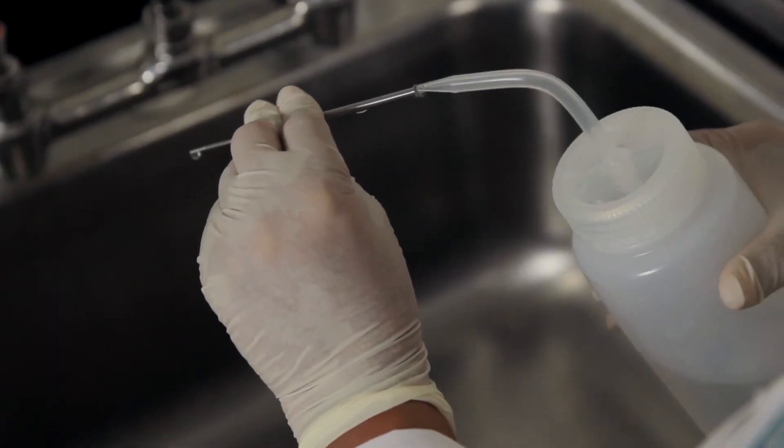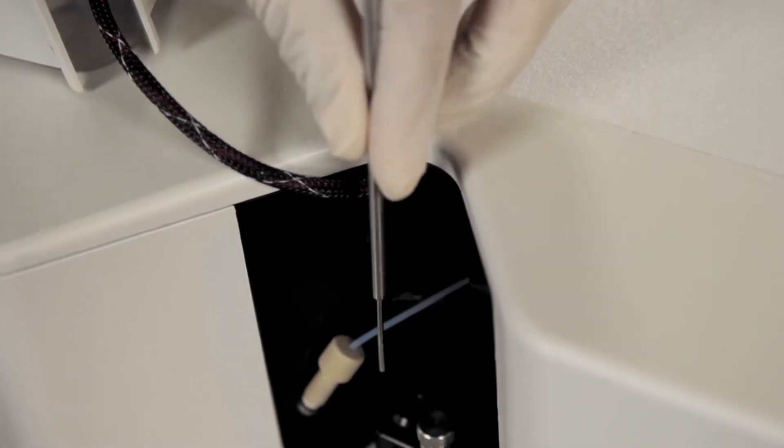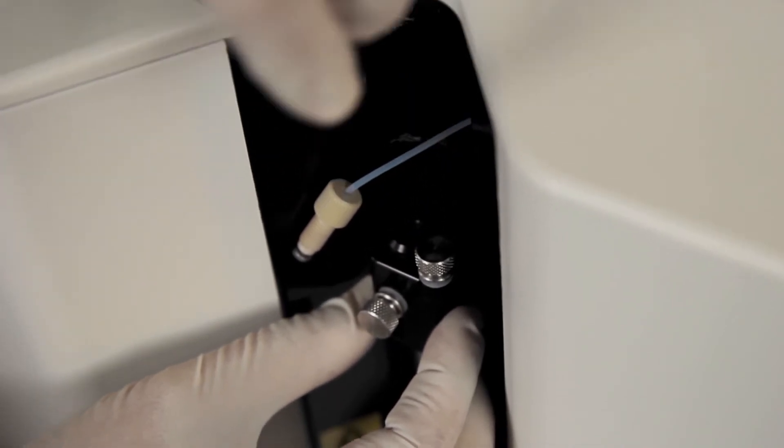Once the needle is removed, you may clean and reinstall it or you may install a new needle. To install the needle, insert it narrow end first into the sample arm, making sure it aligns with the needle guide.